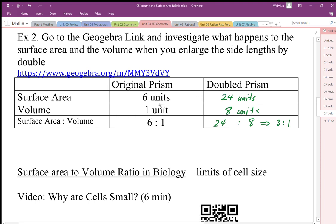When we double the length, width, and height, we go from one unit of volume to eight units of volume. So our surface area to volume ratio goes from a 6:1 ratio